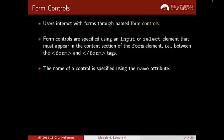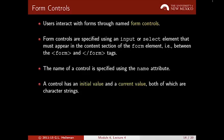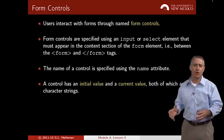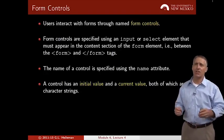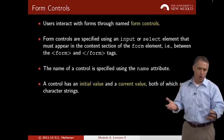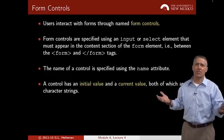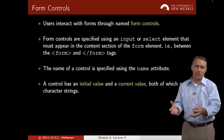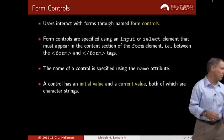Let's talk about the form controls available to you. The user interacts with a web page through form controls. We've already seen the input element; the other HTML element we'll use is the select element. They appear between the open and close form tags. The name of a control is specified using the name attribute, and every control has an initial value and a current value — both are character strings.